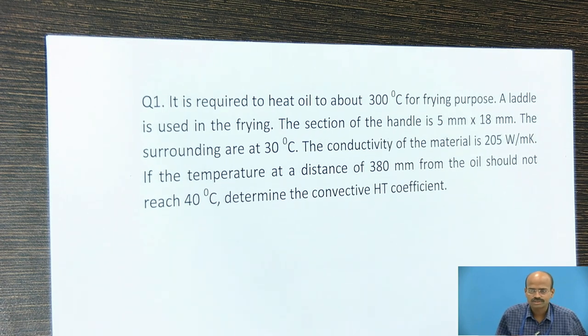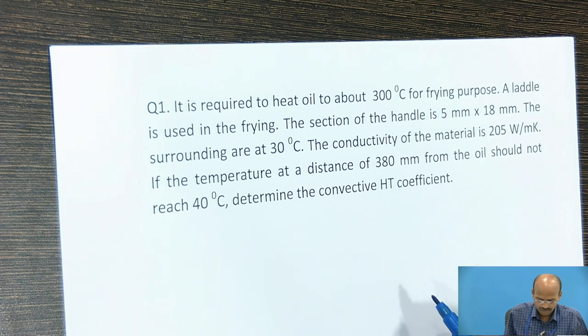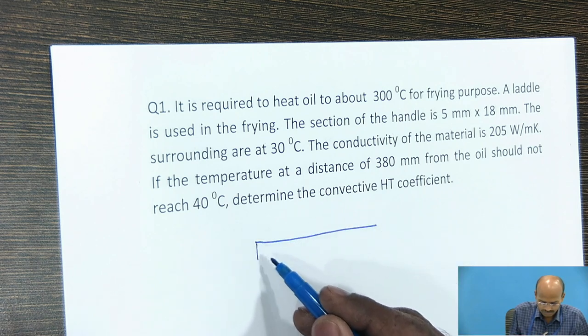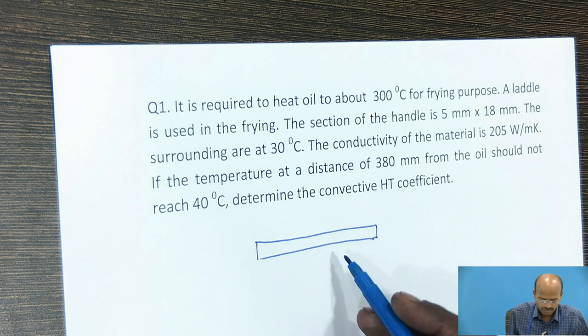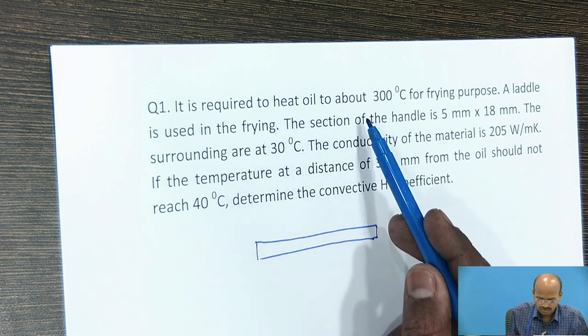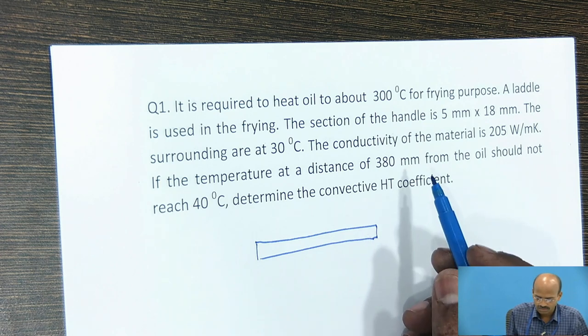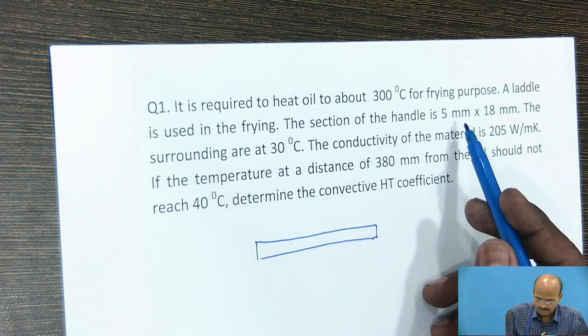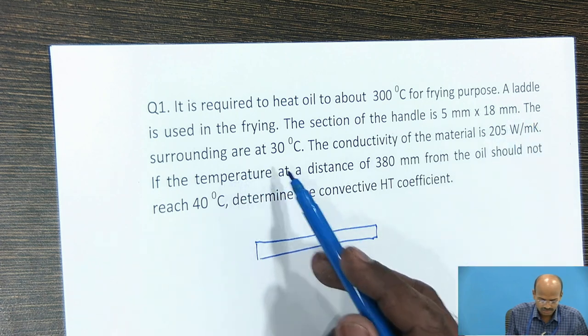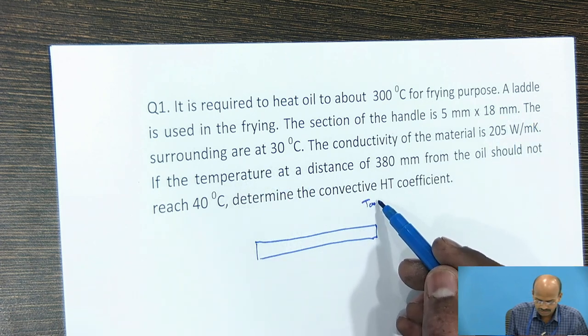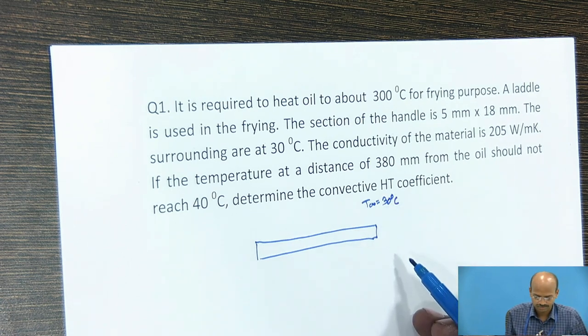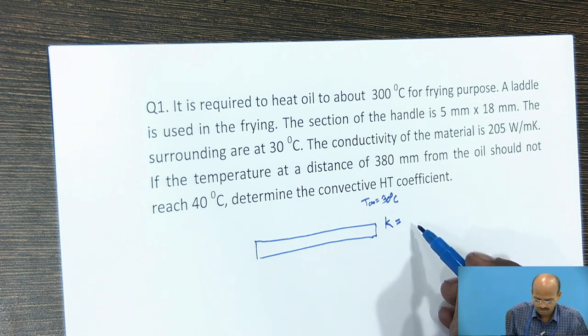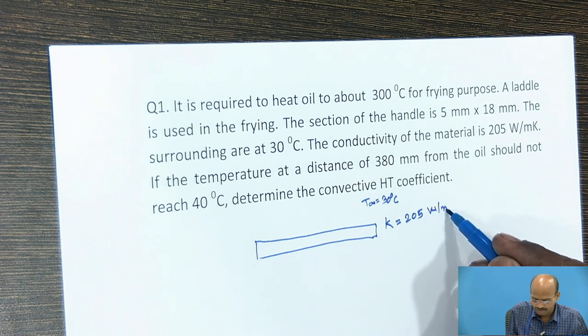Now as per the statement, we should see the given data. A ladle is given. It is required to heat oil to about 300 degree Celsius for frying purpose. A ladle is used in the frying. The section of the handle is 5 mm by 18 mm. The surrounding temperature, T infinity, is 30 degree Celsius. The conductivity of the material is 205 W/mK.